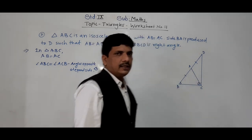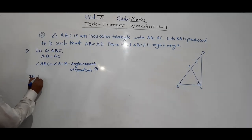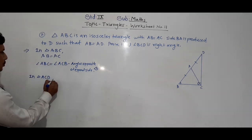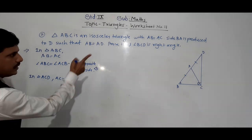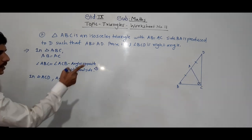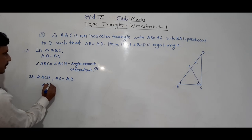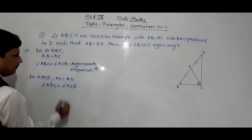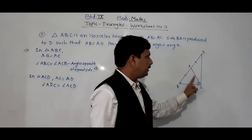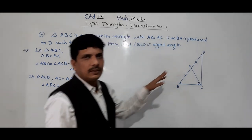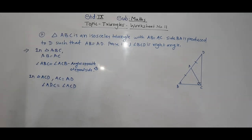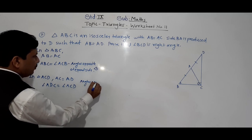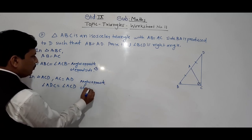Now in triangle ACD, AC is equal to AD. So the angles opposite the equal sides are equal, meaning angle ADC is equal to angle ACD, which is the same as angle ACB. This is our second result.